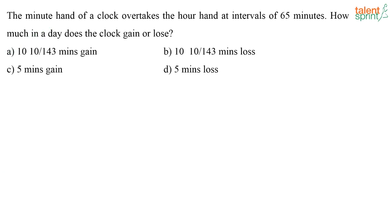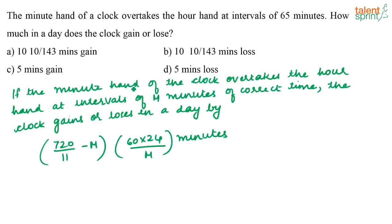Next question: the minute hand of a clock overtakes the hour hand at intervals of 65 minutes of correct time. How much in a day does the clock gain or lose? For questions of this type, you can use a formula. If the minute hand overtakes the hour hand at intervals of m minutes of correct time, the clock gains or loses in a day by: (720/11 − m) × (60 × 24 / m) minutes.